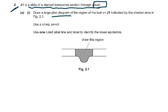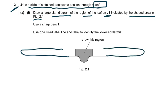Sometimes they don't even tell you what it is. Draw a large plan drawing of the region of the leaf on J1 indicated by the shaded area in figure 2.1 — so this is probably the whole leaf and you only have to draw the plan drawing of this shaded area. Many of you will draw the whole leaf, but it clearly says draw only the indicated region.